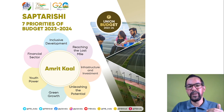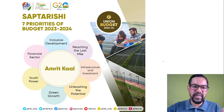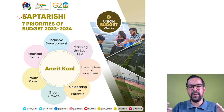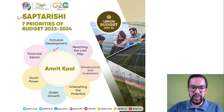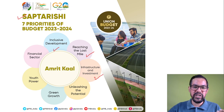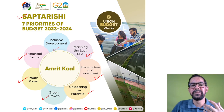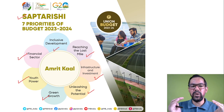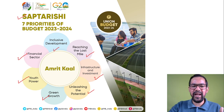This year, since we are in the Amrit Kaal or celebrating the Amrit Mahotsav, the priorities of Union Budget 23-24 are generally known as Sapt Rishi. Sapt Rishi means seven pillars or seven priorities. These seven pillars are: inclusive development, reaching the last mile, infrastructure and investments, unleashing the potential of the Indian economy, green growth, youth power, and the financial sector.